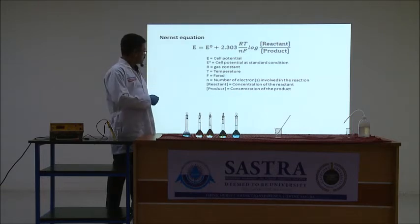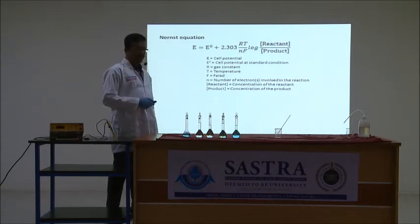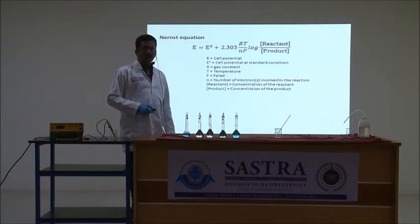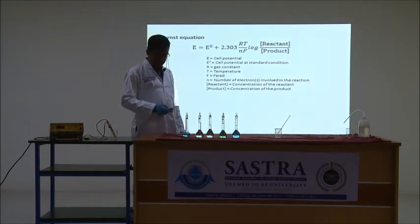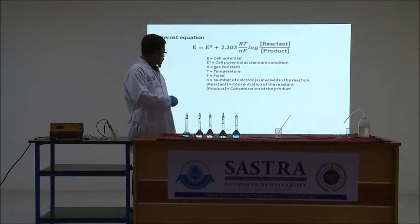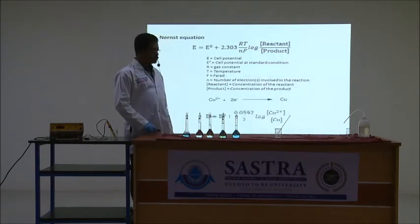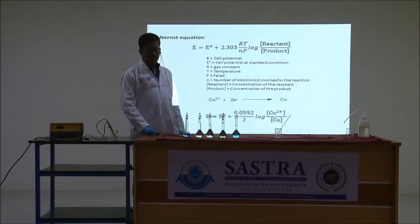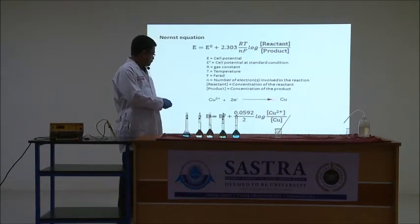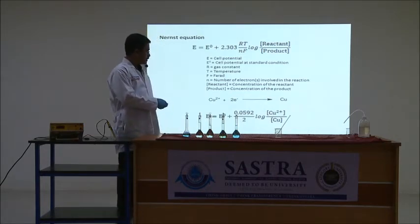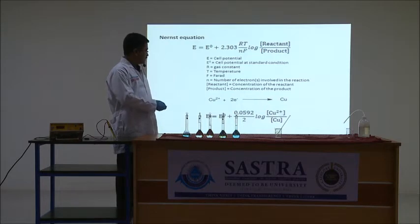If we interchange them, this sign changes. In this experiment, we are going to construct a reduction half-cell in which copper ions (Cu²⁺) are reduced to form copper metal. So copper ions are the reactant and copper is the product. When you substitute, you will get the Nernst equation like this.